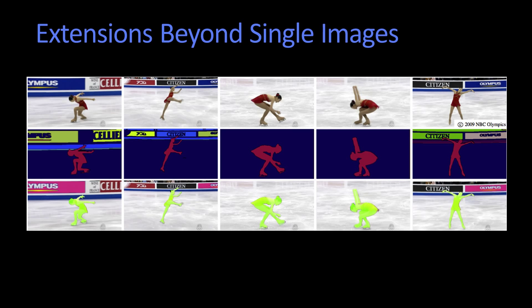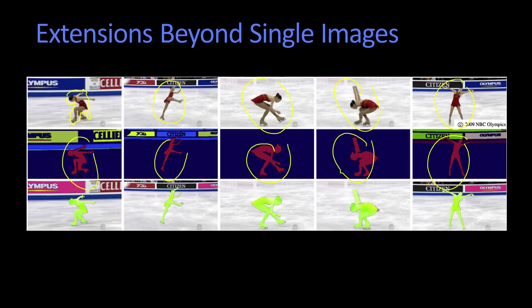Segmentation extends beyond just single images. Here we're taking a look at video. This is work from here at Georgia Tech, done by Professor Irfan Essa and Professor Jim Rehg's group. There's an ice skater going along and the ice skater is being segmented. It's not always so easy because here it's showing you against just ice, but it pulls it out, and you want to be able to extract it carefully.